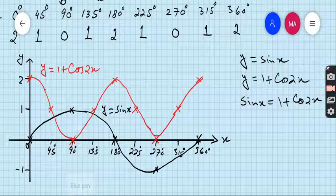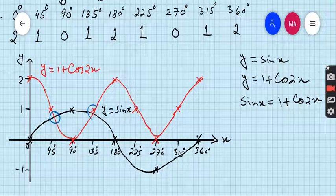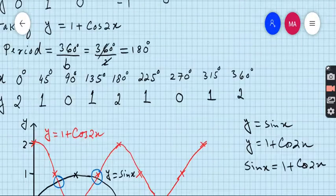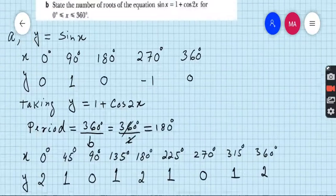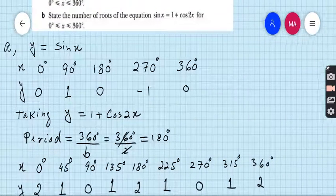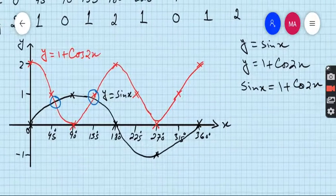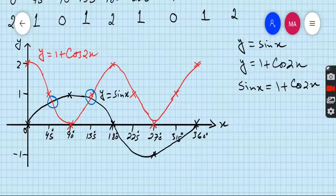Clearly you can see there are two intersection points — one here and the other here. So there are only two roots. The question asks to state the number of roots, and the number of roots is 2 because both graphs cut each other at only two points.